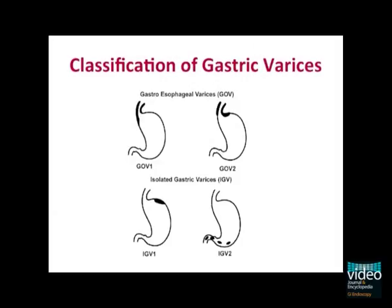Gastroesophageal varices type 1 extend along the lesser curvature and account for about 70% of gastric varices, and those are usually managed as esophageal varices. Gastroesophageal varices type 2 extend along the fundus, while isolated gastric varices can be seen in the fundus or at ectopic sites in the stomach or the first part of the duodenum.